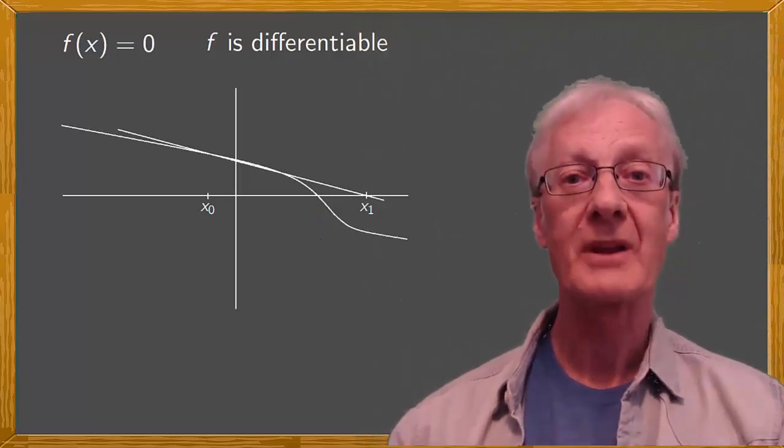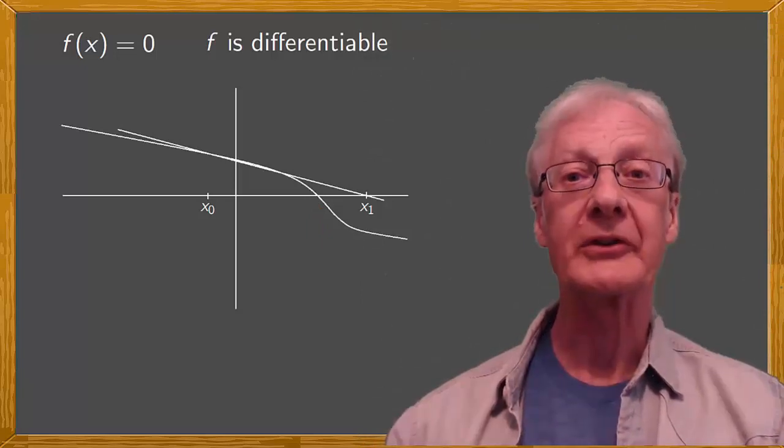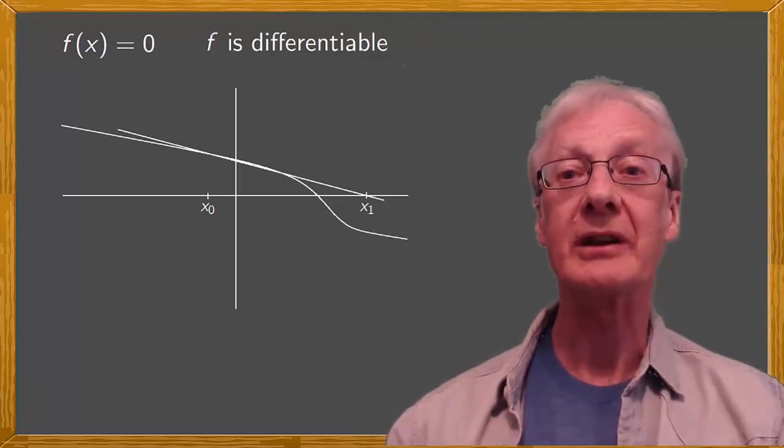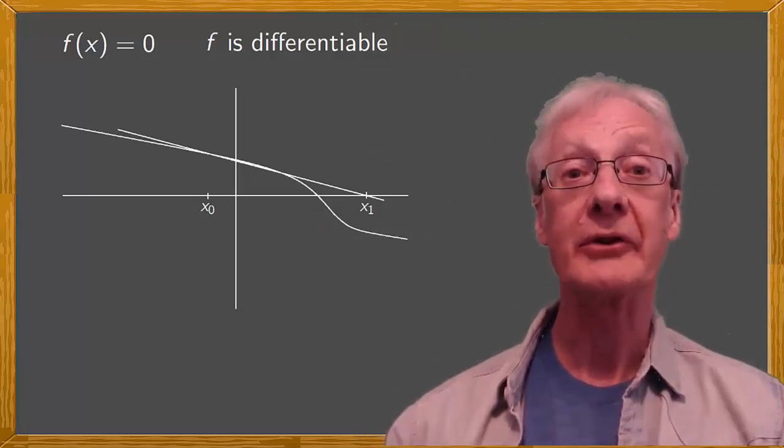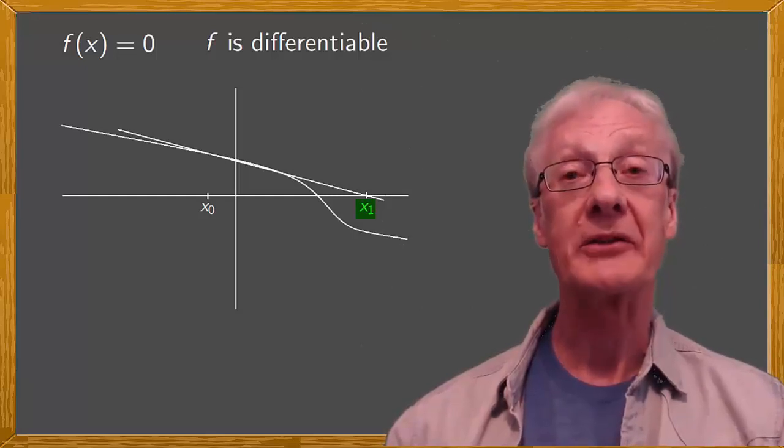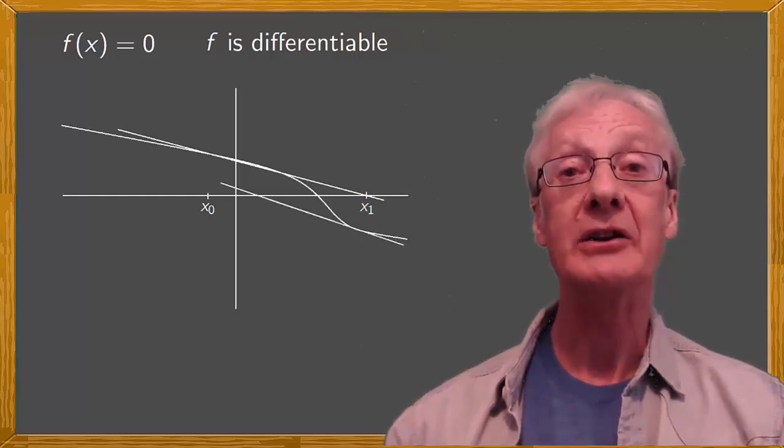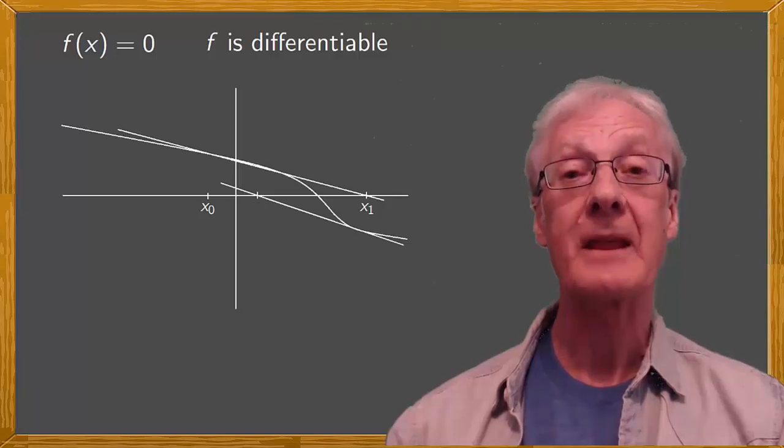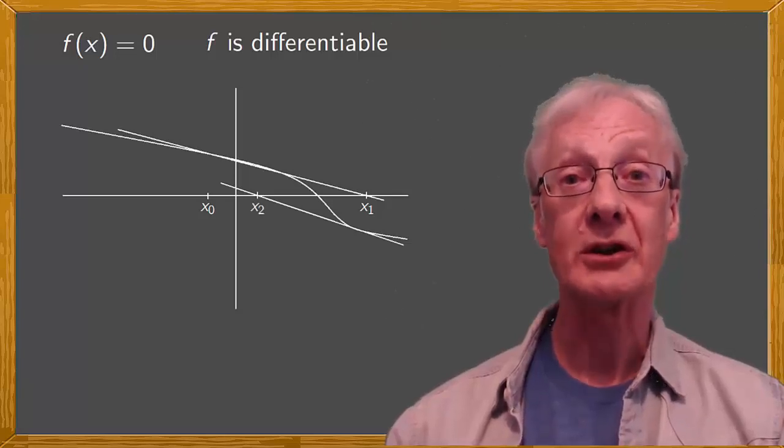What next? We repeat the process, except instead of using x0, we use x1. This gives us a new tangent line and a new intercept on the x-axis, x2, which is a closer approximation to the solution.